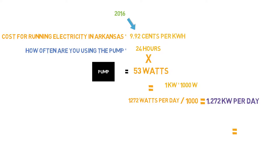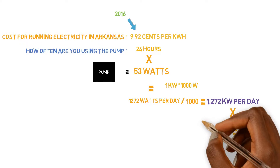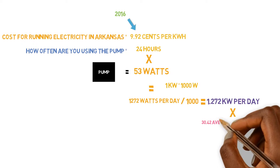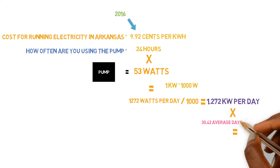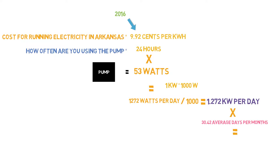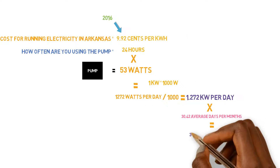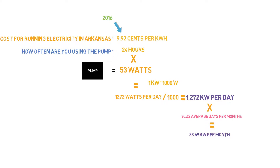So if we want to find out how much it's going to cost us per month, all we need to do is take that 1.272 kilowatts per day and multiply by 30.42. That's the average number of days in a month averaged out throughout the whole year — you get about 30.42 days. That gives us 38.69 kilowatts per month.